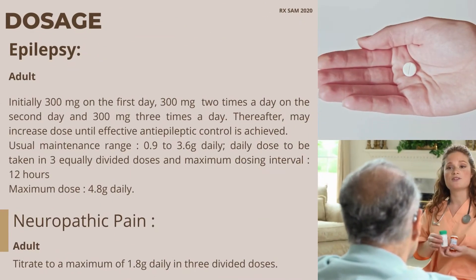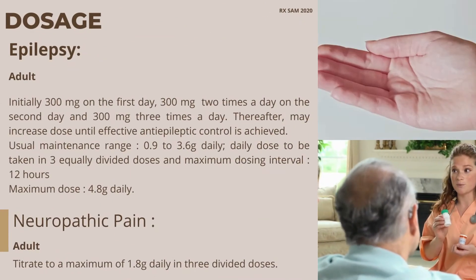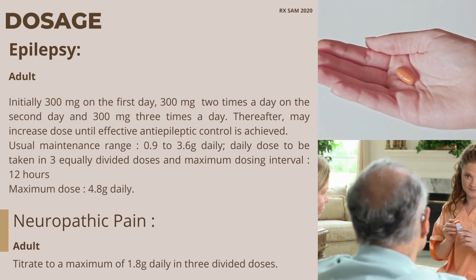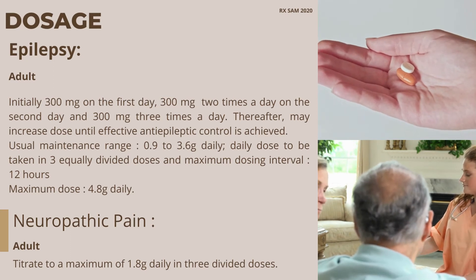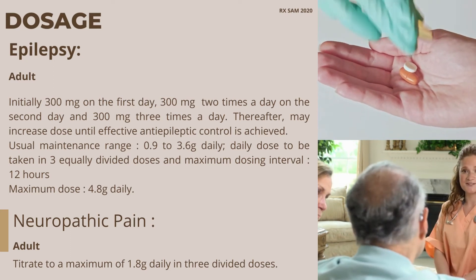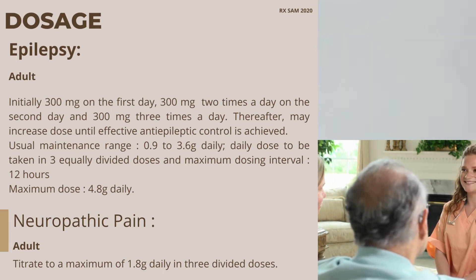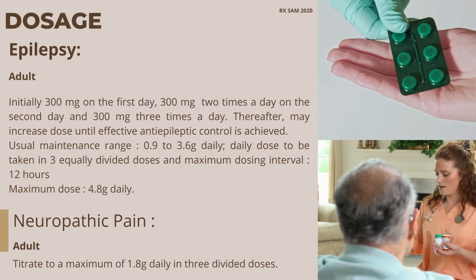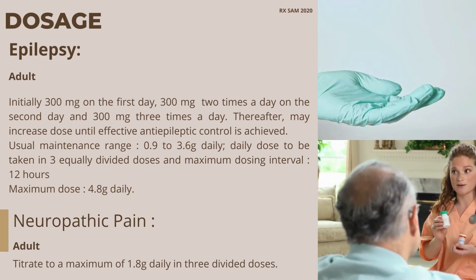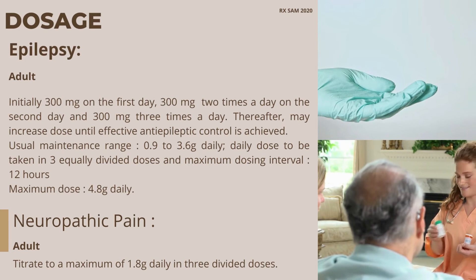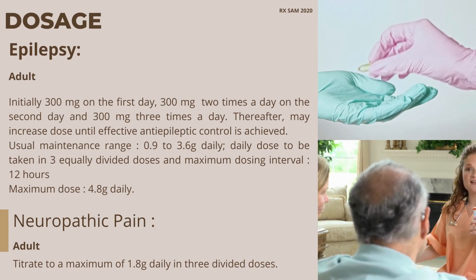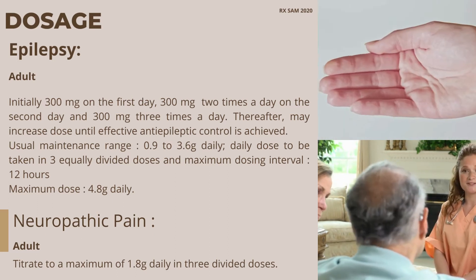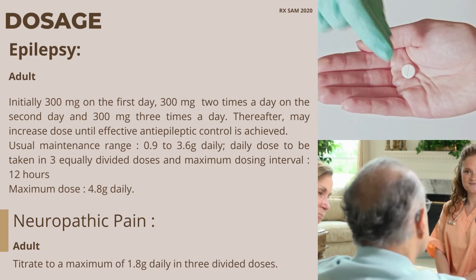Dosage for epilepsy — adult: initially 300 mg on the first day, 300 mg two times a day on the second day, and 300 mg three times a day thereafter. The dose may be increased until effective antiepileptic control is achieved. Usual maintenance range: 0.9 to 3.6 g daily, taken in three equally divided doses, with a maximum dosing interval of 12 hours.